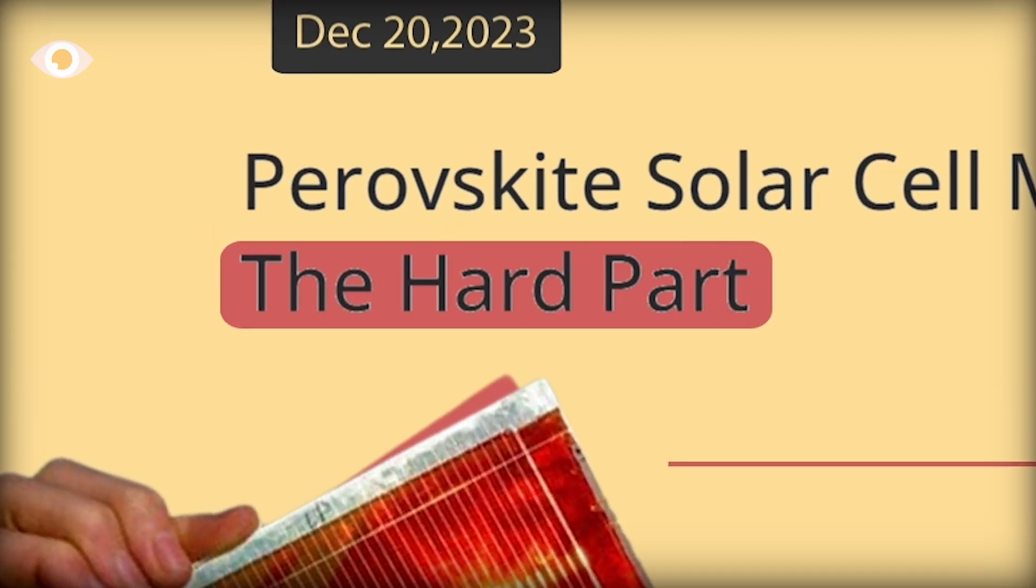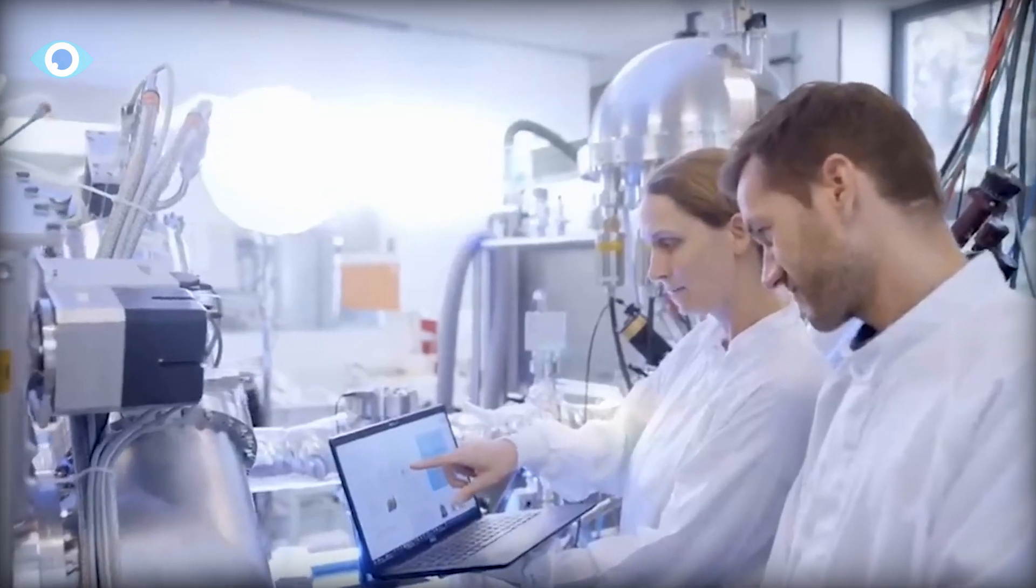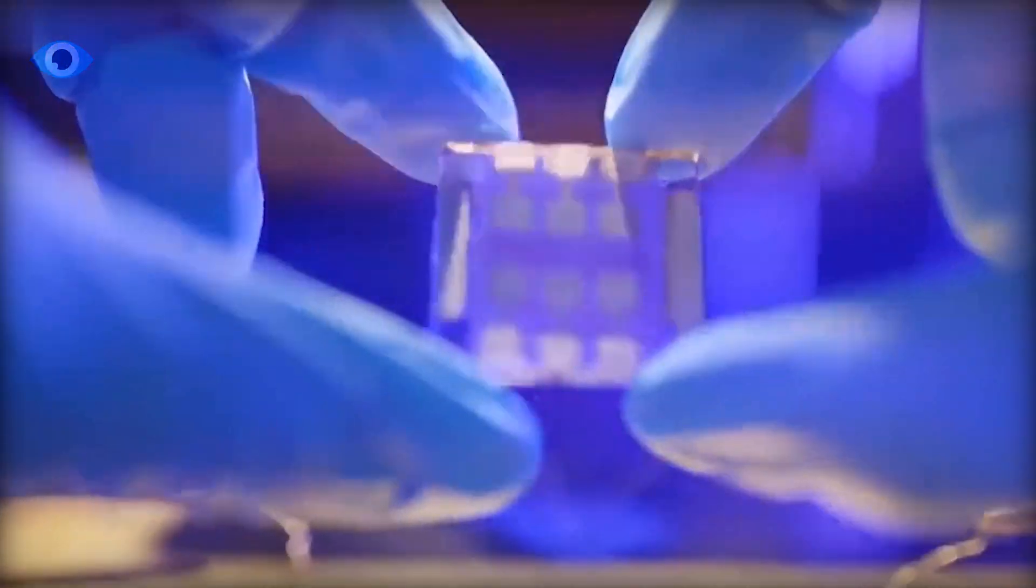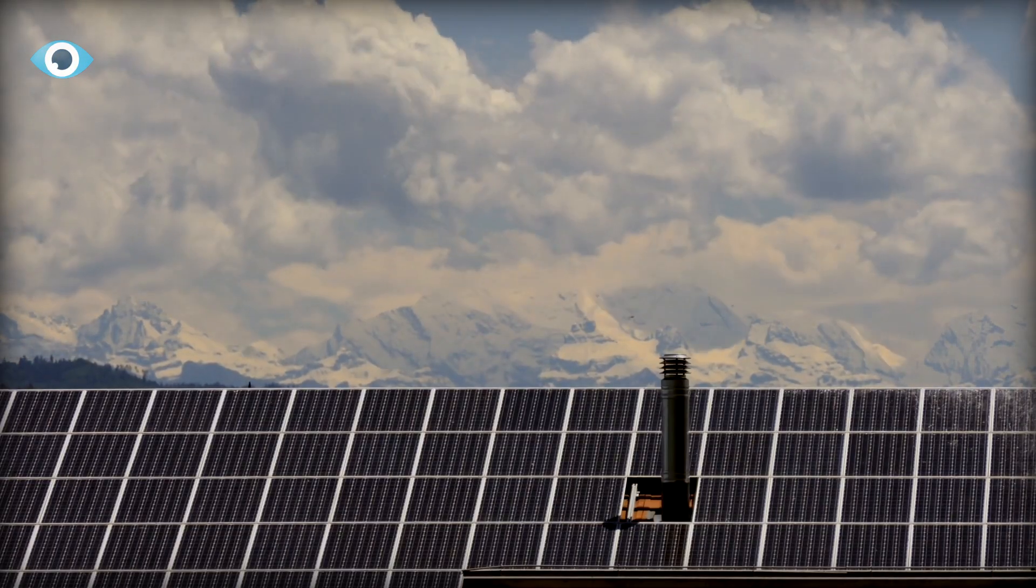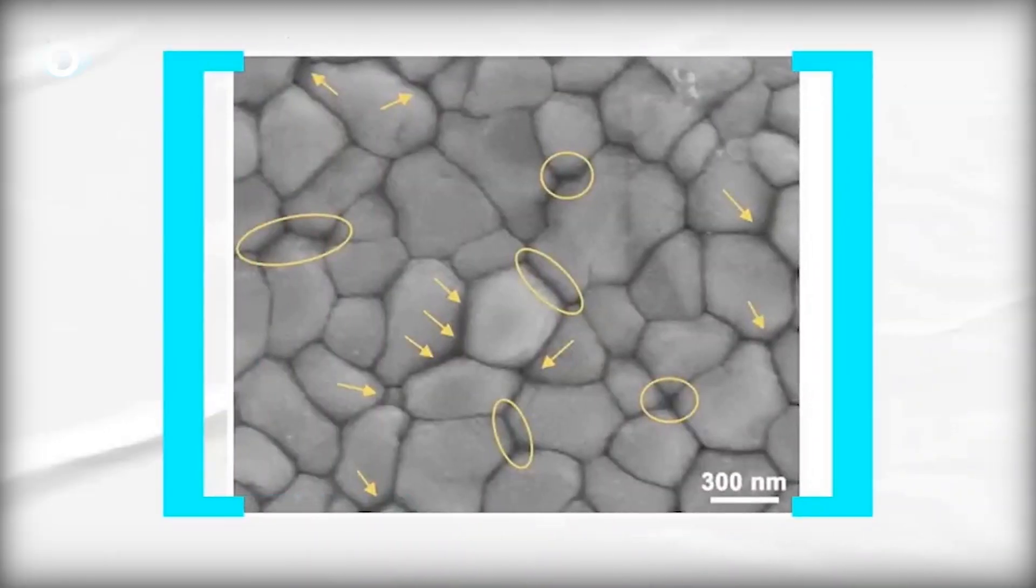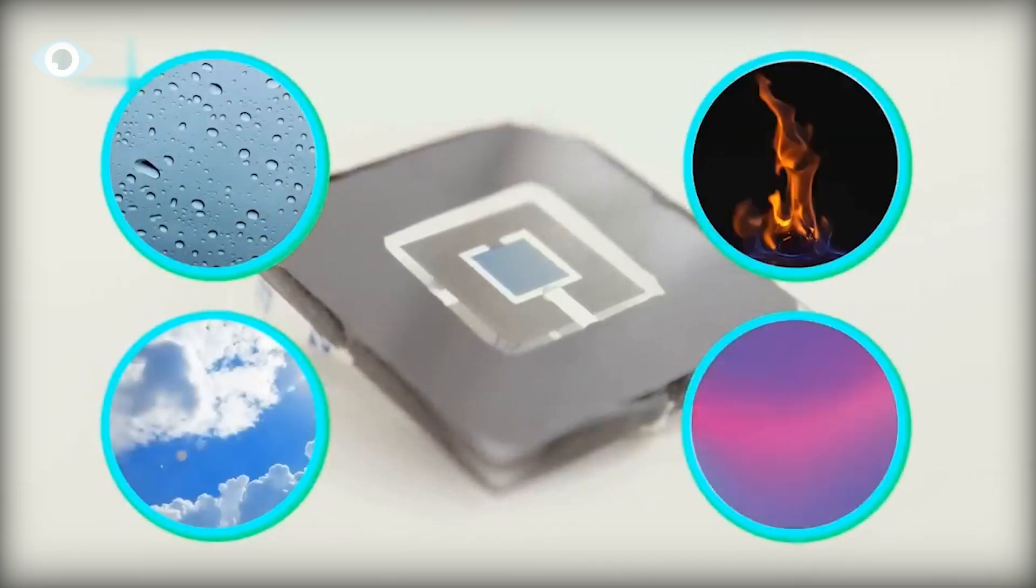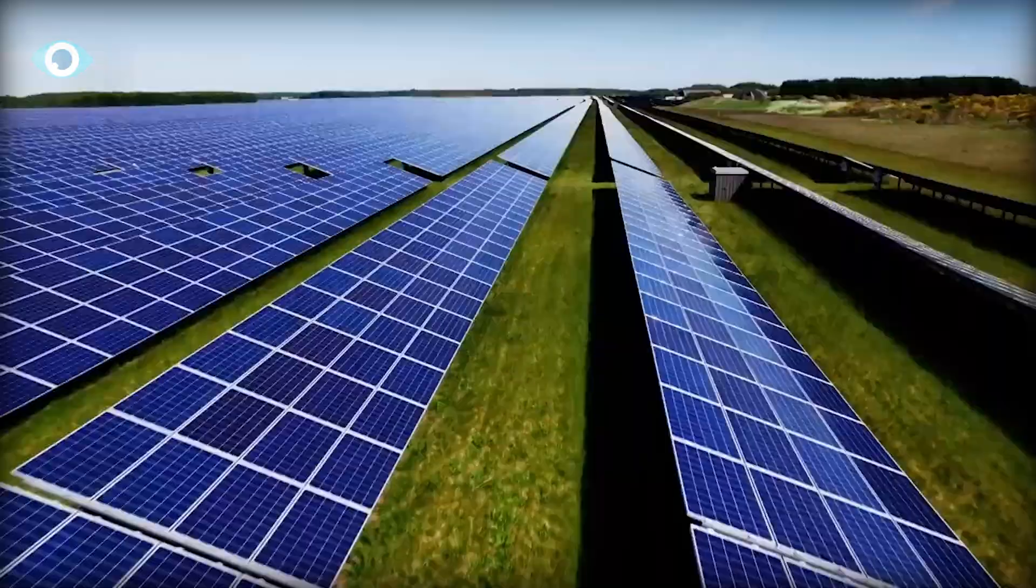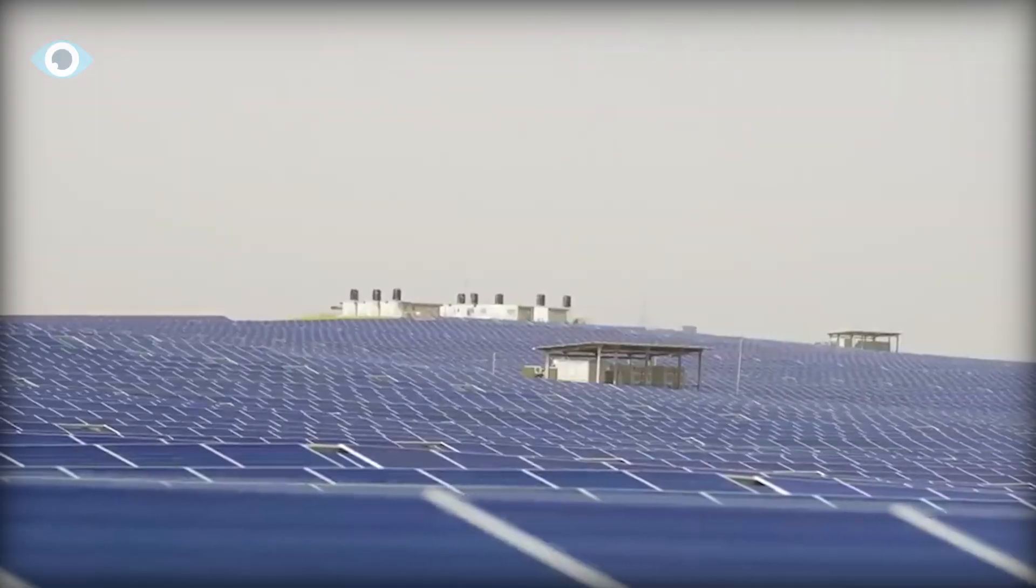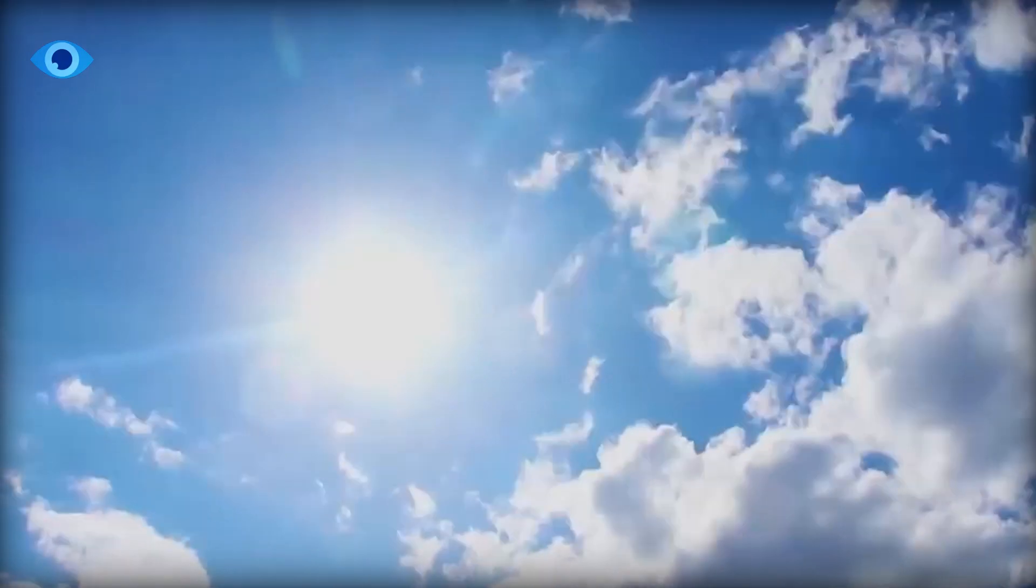The path to widespread adoption of perovskite is not without its challenges. One of the most pressing concerns is the stability of perovskite structures, especially when exposed to real-world conditions. Researchers are hard at work developing innovative encapsulation techniques to protect perovskite cells from degradation caused by factors such as moisture, heat, and UV radiation. These efforts are crucial to ensuring the long-term viability of perovskite technology and its integration into mainstream solar energy systems.